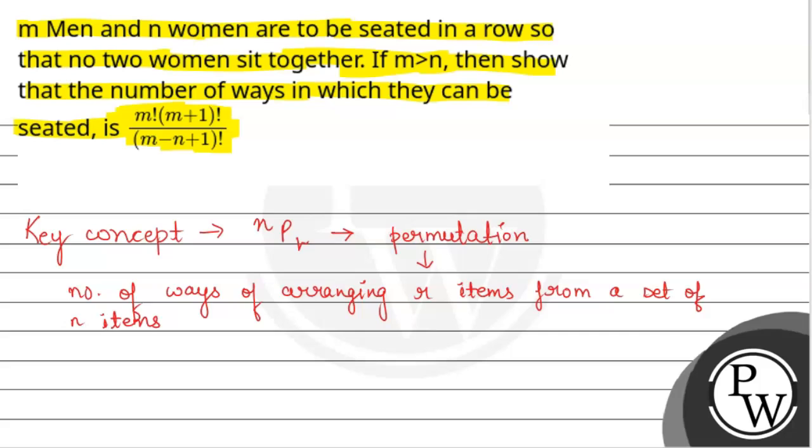हमारे पास क्या है? एक सेट है N items का और हमें उसमें से number of ways select करने है, of arranging R items. So basically, अगर मैं NPR लिखती हूँ, तो NPR की value क्या होती है? This is equal to N factorial upon N minus R factorial. So basically, हम क्या करेंगे? यही concept use करेंगे इस question में.